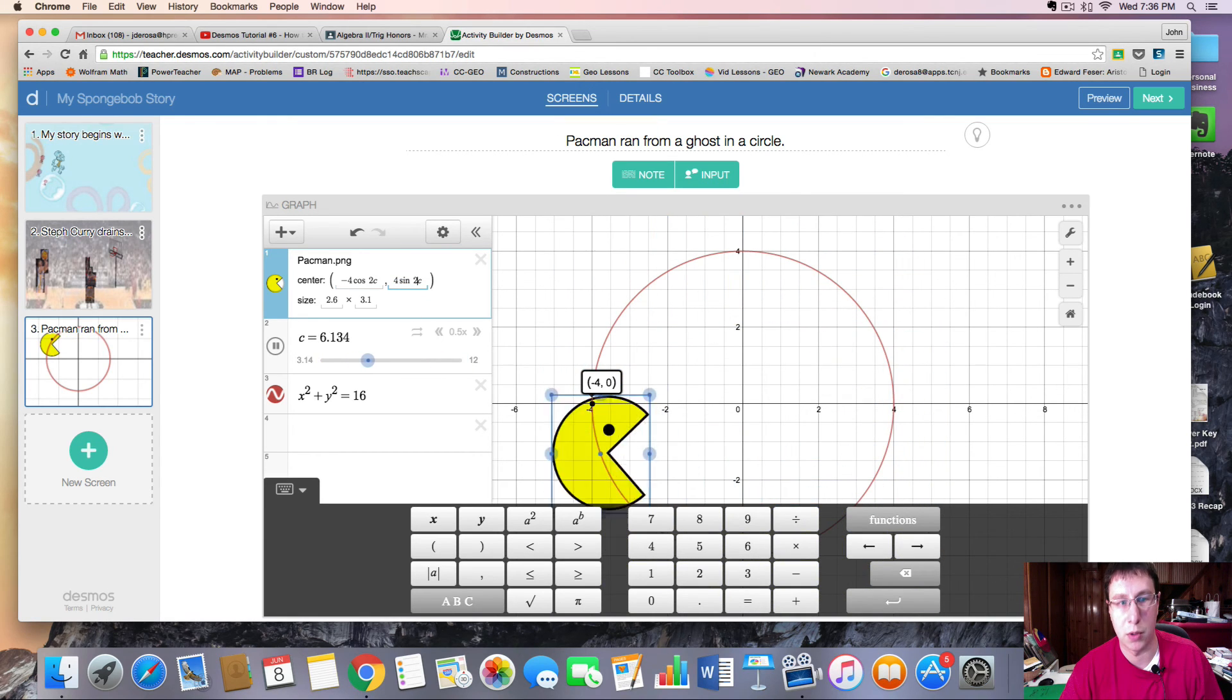He is now going quicker. But what happens if I change it to a 2.5? Make sure they match or you're going to get funky stuff. He's now going slower. While the slider speed remained constant, you can change the speed of an object simply by changing the function in its coordinates.